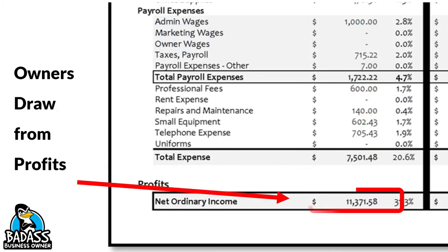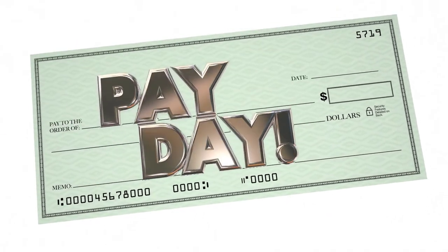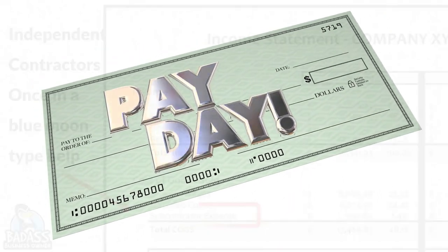Now, the business owner you will be able to do an owner's draw if the business is profitable. You will see here this business did make money, so the owner could pull out an owner's draw on top of their labor hours if they wanted to, or they could just leave it in the business for future growth. If the business was not profitable, the business owner would at least have their employee wages that we captured earlier.